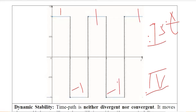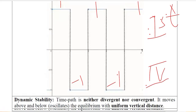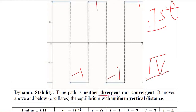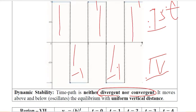This oscillation is happening, and it is neither convergent nor divergent, because the distance remains the same. No matter above or below the equilibrium or x-axis, the distance is the same — it is not changing. So it is neither getting close nor getting far. There is a uniform vertical distance that is not changing, and still there is oscillation. So we can say it is neither convergent nor divergent in nature.